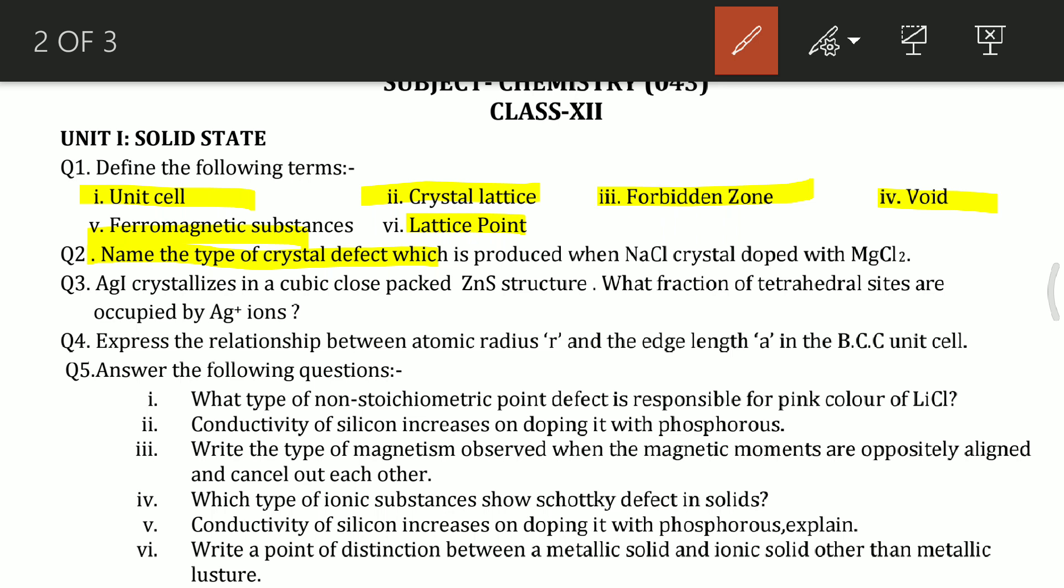Question 3: AgCl crystallizes in a cubic close packed ZnS structure. What fraction of tetrahedral sites are occupied by Ag+ ions? Question 4: express the relationship between atomic radius r and the edge length a in the BCC unit cell. You should know all BCC and FCC formulas and the packing percentages. I have already made videos on the formulas, please refer to them. This question is very important for your examination.